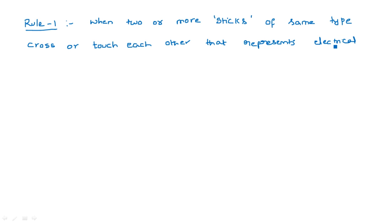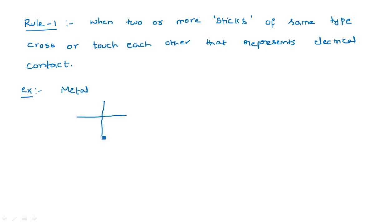For example, take a metal layer — I am using blue color for metal. I am taking a metal line horizontally and the same metal line vertically. When you have this type of cross-section, a horizontal and vertical line of the same layer touching at one point, there is an electrical connection between these two.